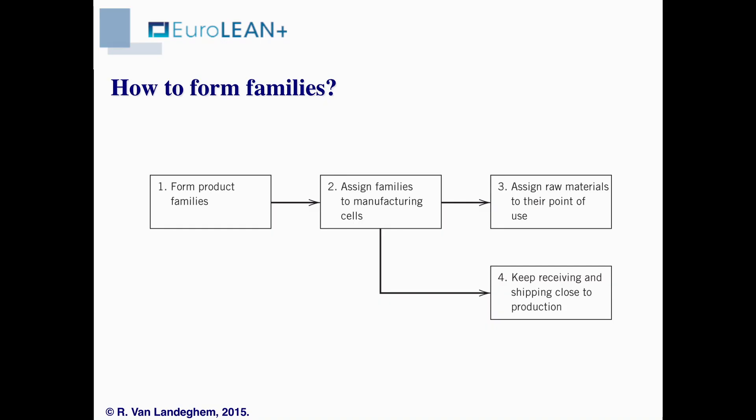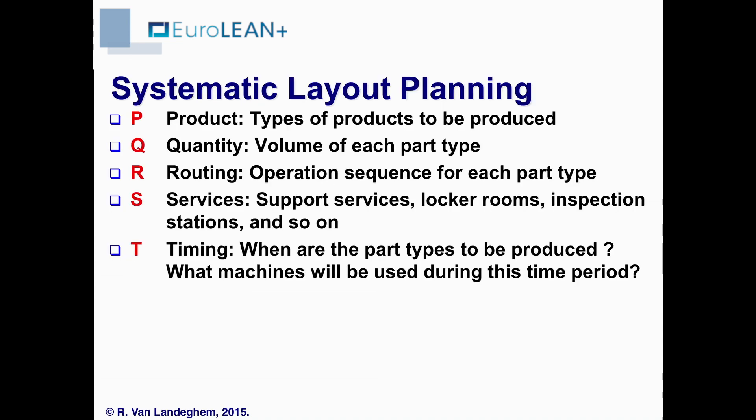Once we know what happens in the cells, we can determine the material flows going into the cell and the finished products or intermediate products flowing out of the cell. This will be important information for the layout. Most layout methods use one or more of the data listed here, which are combined in an acronym PQRST.